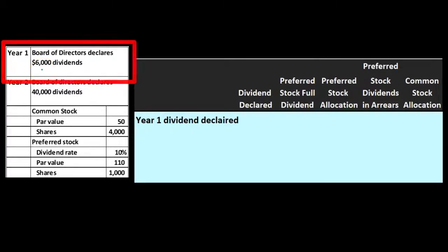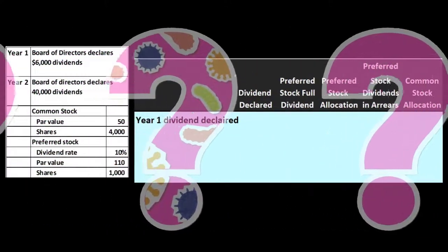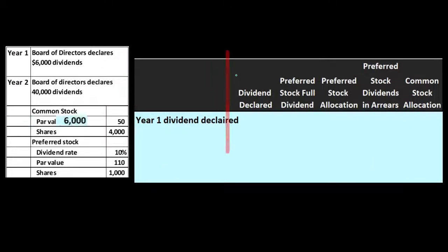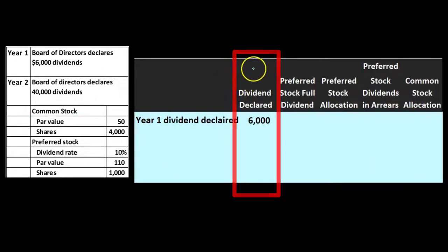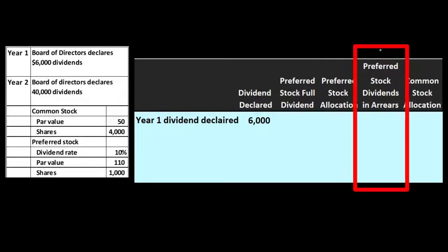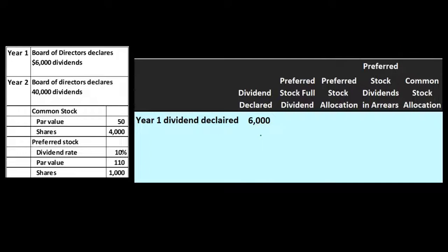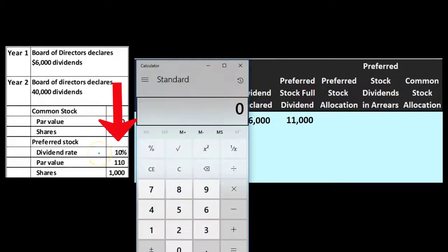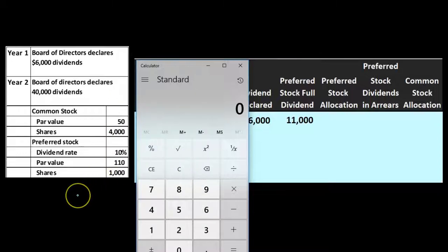If the board of directors decides to pay a $6,000 dividend, they don't get to decide who it goes to — it follows a set of rules. Here's how you set up the table: the dividend declared is $6,000. The preferred stock full dividend would be $11,000. You calculate that by taking 1,000 shares times the par value of $110, which gives $110,000, then multiply by the 10% dividend rate to get $11,000. Think of it like an if-then formula: if the declared amount is greater than or equal to $11,000, they get $11,000; if it's less, they get whatever is declared.